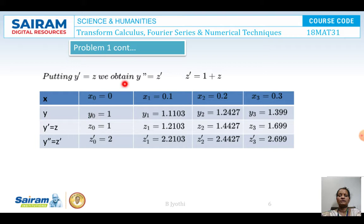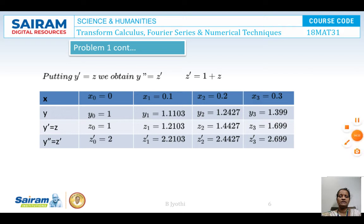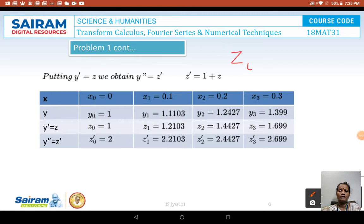Putting y-dash equals z, we get y-double-dash equals z-dash, and z-dash is given by 1 plus z. So x0 is 0.1, x1 is 0.2, x2 is 0.3; y0, y1, y2, y3 and z0, z1, z2, z3 values are taken from the table. z0-dash is not given to us — we need to calculate it. z0-dash is given by 1 plus z0. Since z0 equals 1, we get 1 plus 1 equals 2. Therefore z0-dash equals 2.